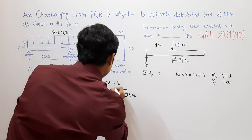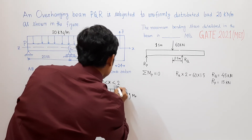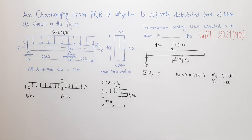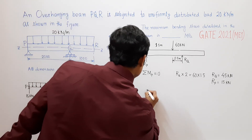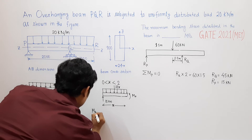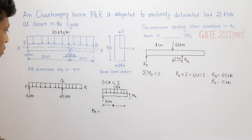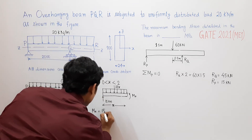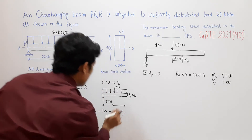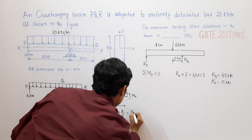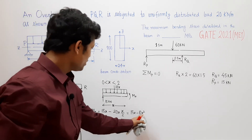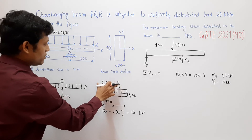The total distributed load up to section x acts at the midpoint and equals 20 times x. So the bending moment at section x is mx equals 15x minus 20x times x over 2, which simplifies to mx equals 15x minus 10x squared. This is the bending moment equation for 0 less than x less than 2.